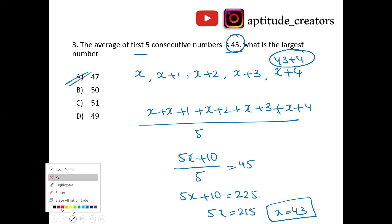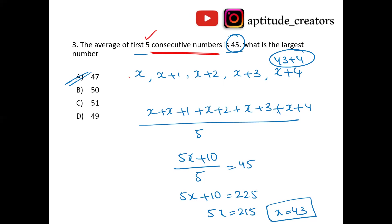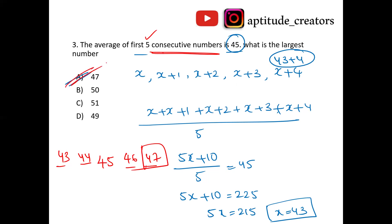No need to use that long method. Shortcut: consecutive numbers means side-by-side numbers. Average is 45 means the middle number is 45. The next two numbers are 46 and 47, and the previous two numbers are 44 and 43. The question asks for the largest number, which is 47. Answer is 47.